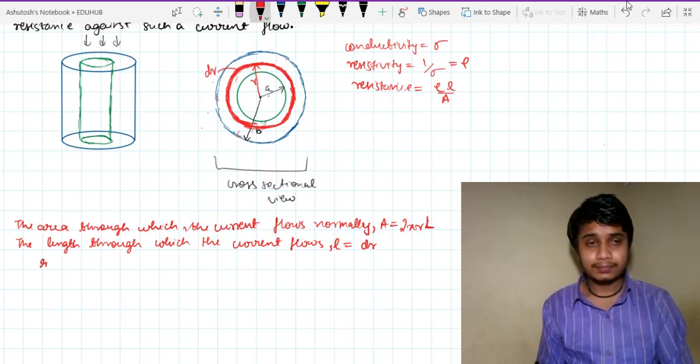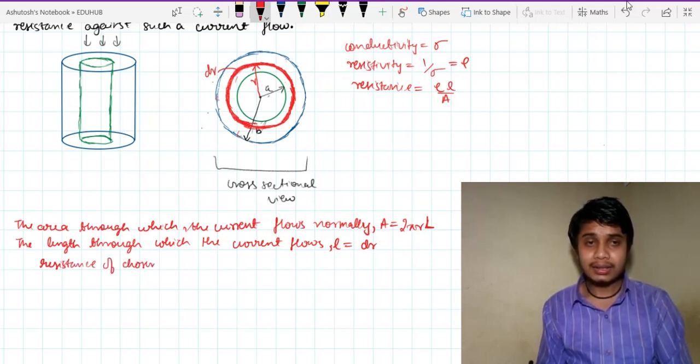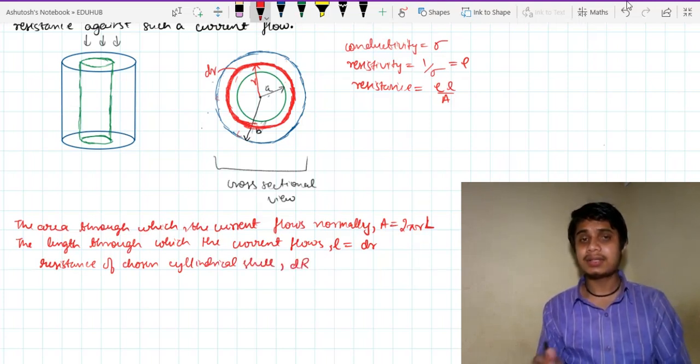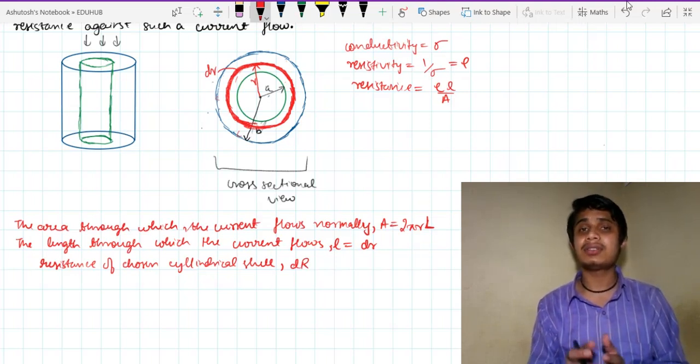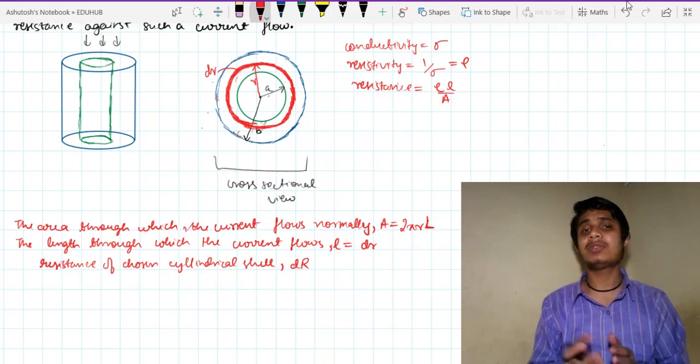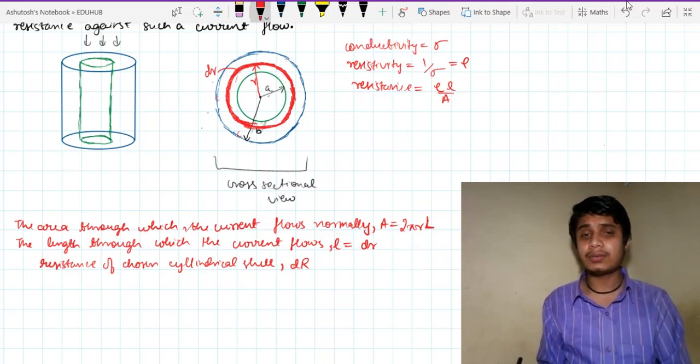The resistance of chosen cylindrical shell. Suppose I write it dR because it is a small resistance of just a shell. We have to find for the whole system. So we will be using a bit of integration over here.